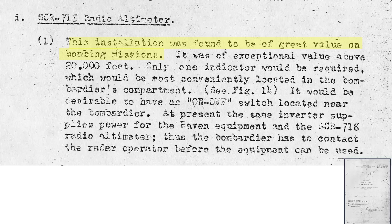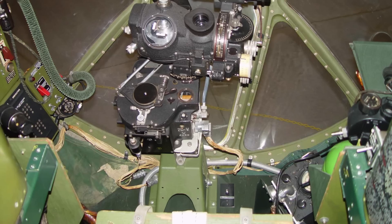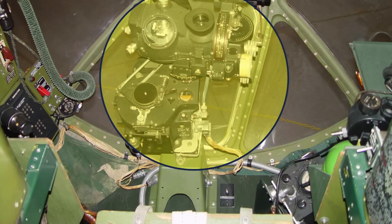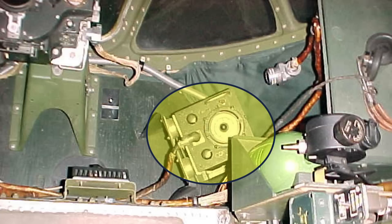The radar altimeter provides great value on bombing missions and exceptional value at altitudes above twenty thousand feet, as described on this page from a 1945 AAF B-29 bomber radio suitability final report. A unit should be located in the bombardier's compartment. This image shows the location of a radar altimeter indicator in the Enola Gay. The Norden bombsight is here. Another view looking down over the radar altimeter indicator.